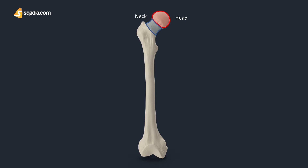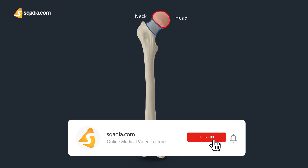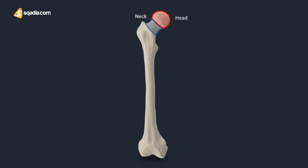The neck is the region connecting the head of the femur with the shaft of the femur. It is cylindrical and round, projecting in a superior and medial direction. A wide range of motion at the hip joint is achieved as it is set at an angle of approximately 135 degrees to the shaft. Due to this specific angle, we are able to move the hip joint.